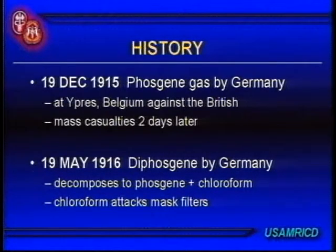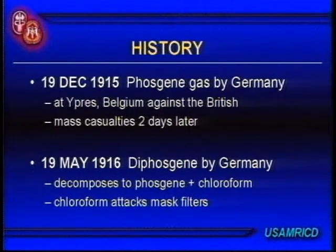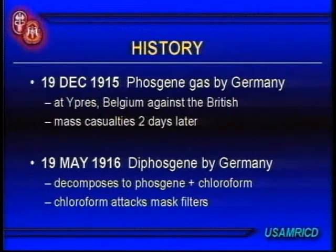About half a year later, they used phosgene again at Ypres, Belgium, this time against the British. The important note here is that the mask casualties started not right after the exposure, but two days later — we'll talk about that more in a little while. Once the British came up with a decent mask to protect against phosgene, the Germans came up with diphosgene, which when released converts into a mixture of phosgene and chloroform. The chloroform was intended to attack the filters of the masks to degrade them and allow the phosgene to leak through. It didn't work too well, but it was a battle for the initiative, and eventually the British came up with an even better mask.